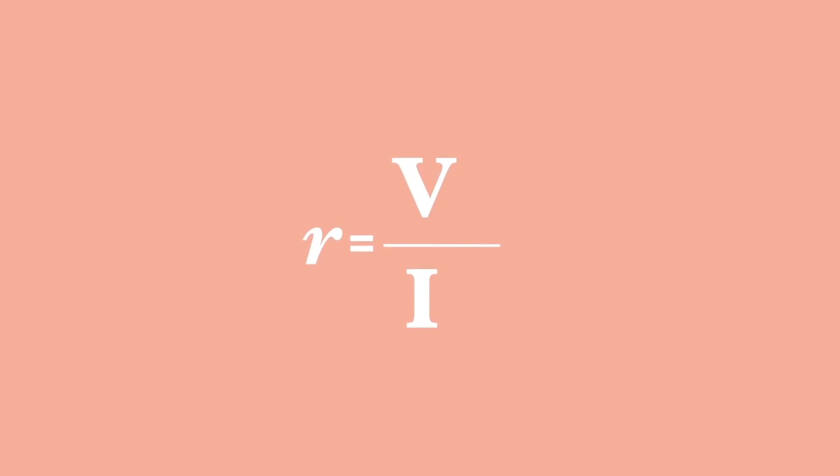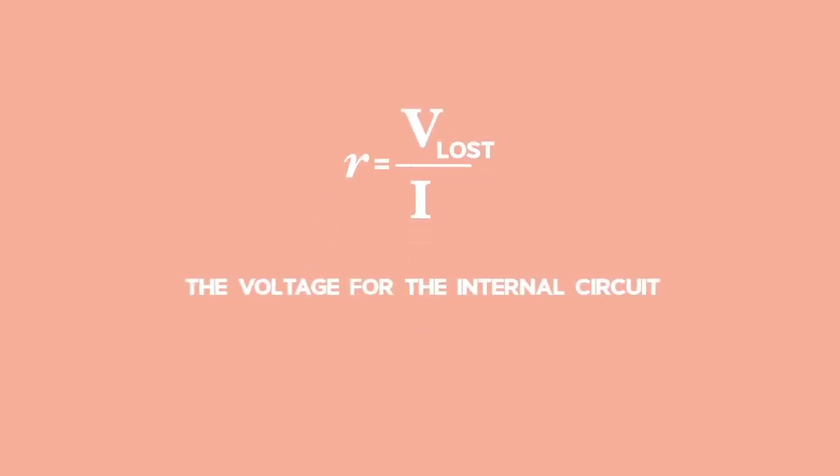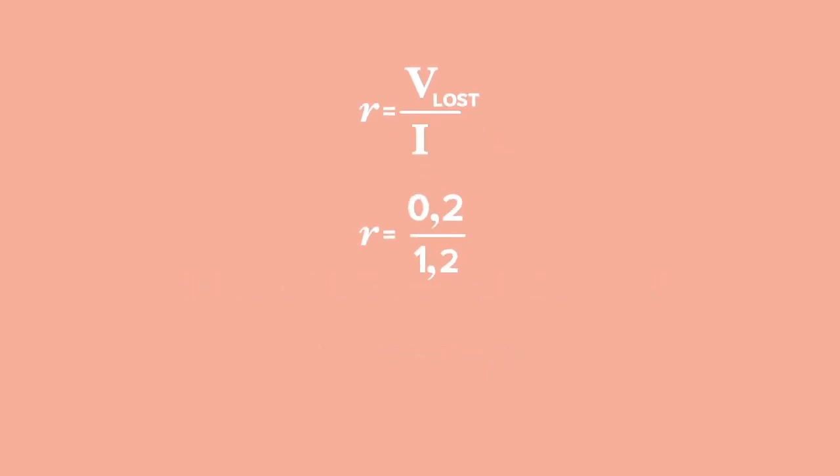Now for the easy part. Remembering that internal resistance is just like any resistor, we can use Ohm's law on it too, as long as we use the voltage for the internal circuit or lost volts. So 0.2 lost volts over the current through the cell of 1.2 amperes works out to internal resistance of 0.17 ohms when we round off to two decimal places.